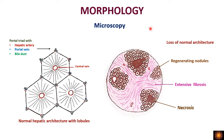On microscopy, there is loss of the normal architecture. Normally we have hepatic lobules with a central vein at the center and a portal triad at the periphery — the portal triad contains the hepatic artery, portal vein, and bile duct — with hepatocytes arranged radially from the central vein. In cirrhosis, because of extensive fibrosis and loss of hepatocytes, this arrangement is lost.